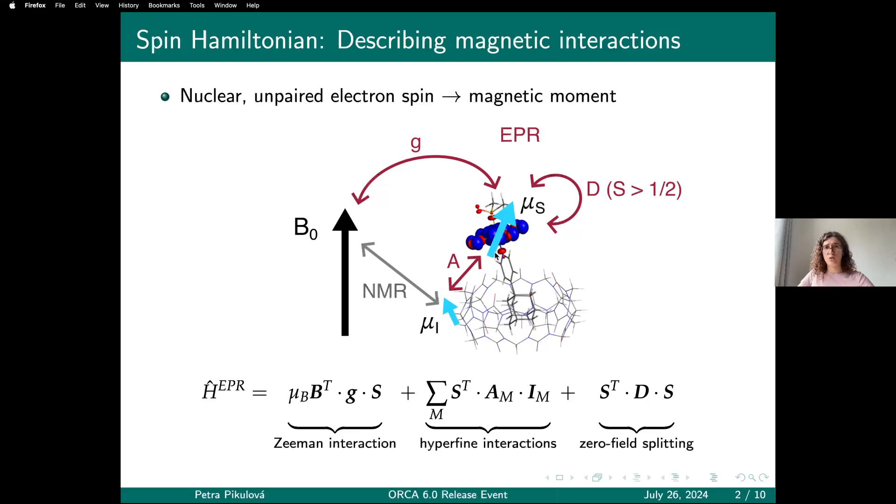The main one would be the Zeeman interaction between the electron spin magnetic moment and the external field, parameterized by the g tensor. Then if you have some nuclei with non-zero spin, you might have hyperfine interactions parameterized by A tensors. And if your total electron spin is greater than one-half, you might encounter the zero-field splitting term, parameterized by this tensor D.